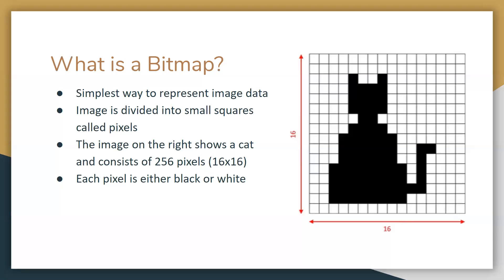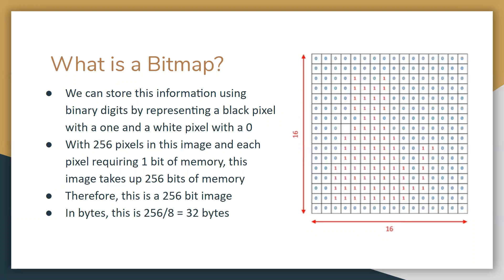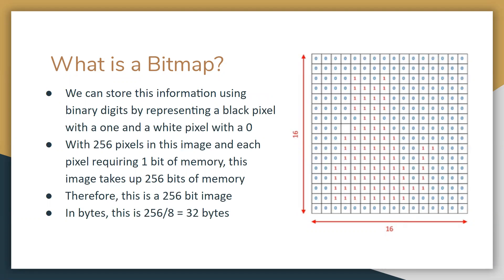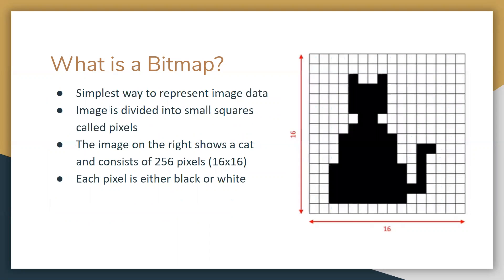Each pixel is either black or white. We can store this information using binary digits, by representing each pixel with either a one or a zero. A black pixel is a one and a white pixel is a zero. With 256 pixels in this image and each pixel requiring one bit of memory, this image takes up 256 bits of memory. So we can call this a 256-bit bitmap image.